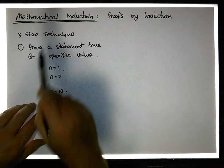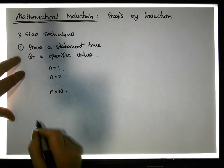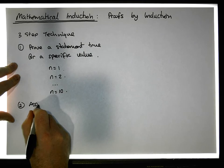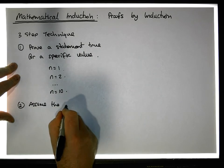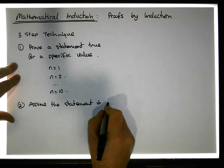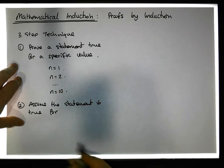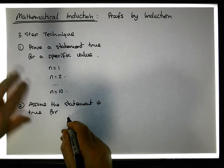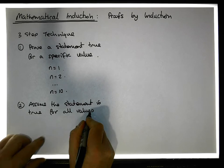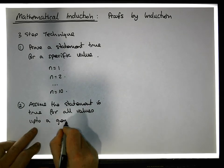The next step in the process is to assume the statement is true for a general value — that is, assume the statement is true for all values up to a general value.